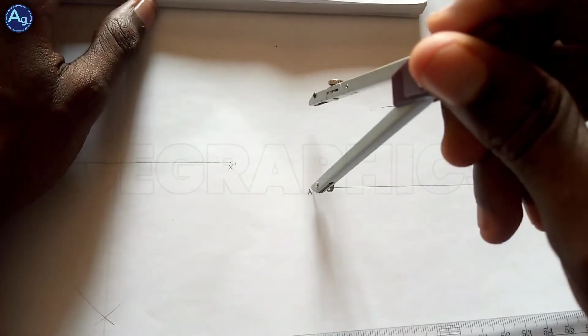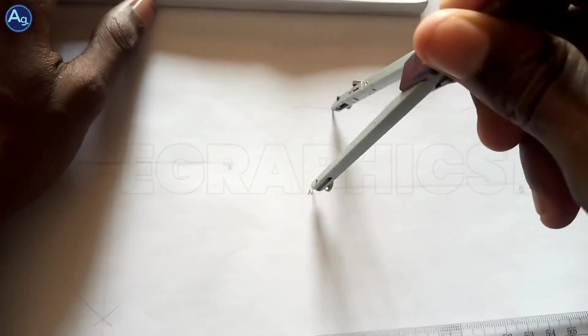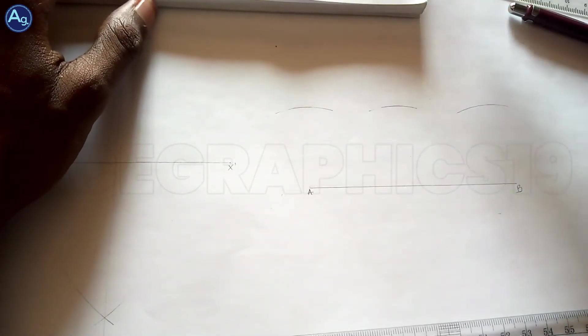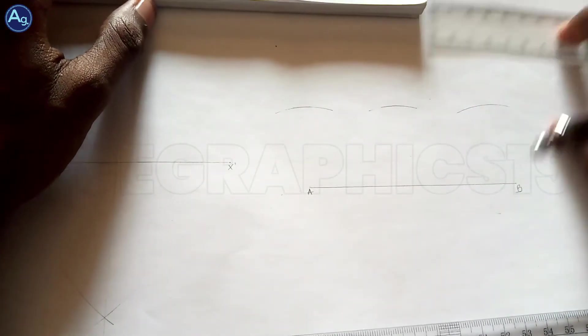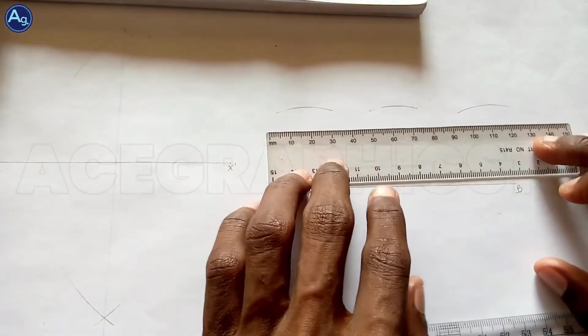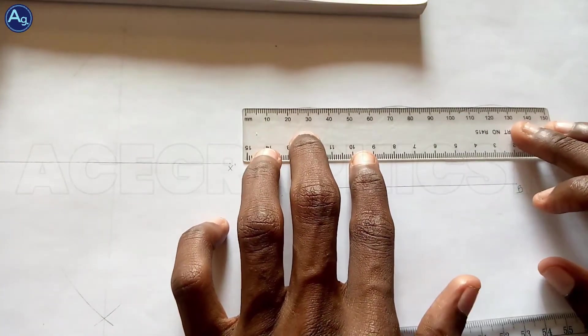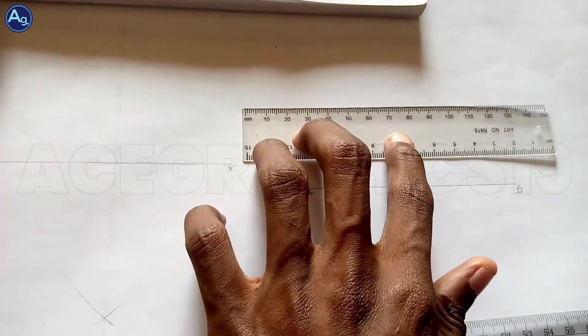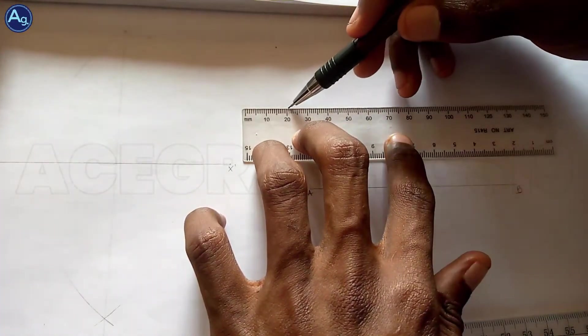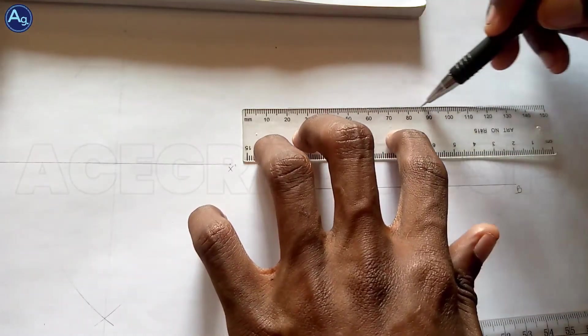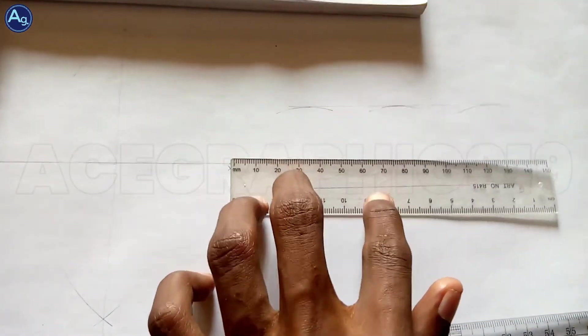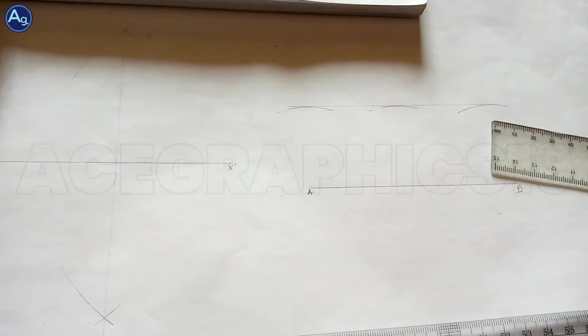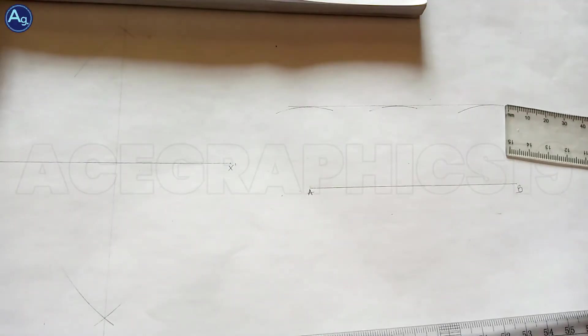Same radius, draw an arc. Now at the top of each arc, we draw a straight line. We've successfully drawn a line parallel to this line.